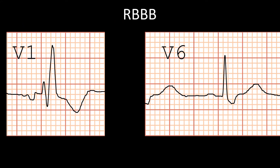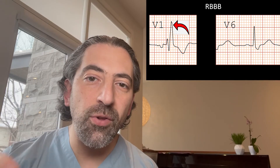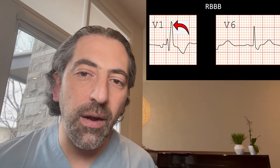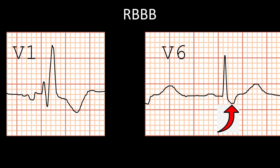In right bundle branch block in lead V1 and V6, you can see there's an RSR prime complex in lead V1. Usually the second R prime is larger than the initial r in lead V1 because the latter R prime comes from slow right ventricular depolarization, giving it a larger, wider appearance. And in lead V6 we see a broad s wave.